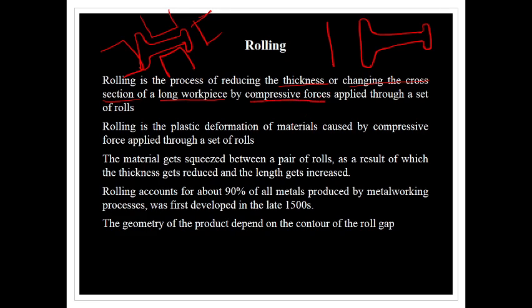Rolling types are hot rolling and cold rolling, defined based on the recrystallization temperature. If rolling is carried out above the recrystallization temperature, it is called hot rolling. If it is carried out below the recrystallization temperature, it is called cold rolling. Rolling is a plastic deformation of metal caused by compressive force applied to a set of rollers. The material gets squeezed between the pair of rollers, and as a result the thickness gets reduced and the length gets increased.